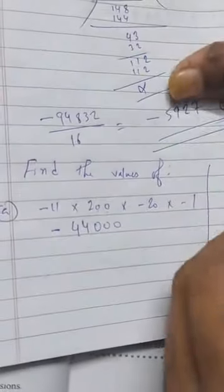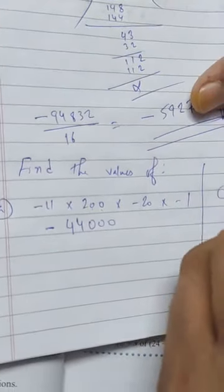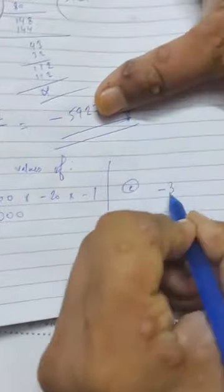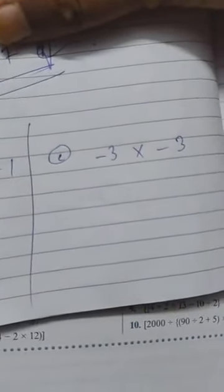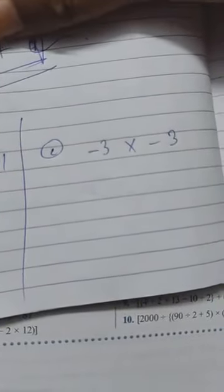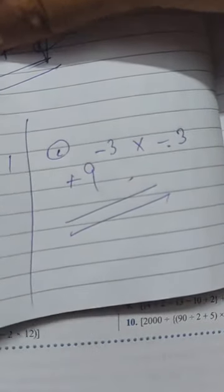The next question is minus 3 multiplied by minus 3. How many negative integers are there? There are 2 negative integers. Minus times minus gives plus, and 3 times 3 is 9, so your answer is plus 9.